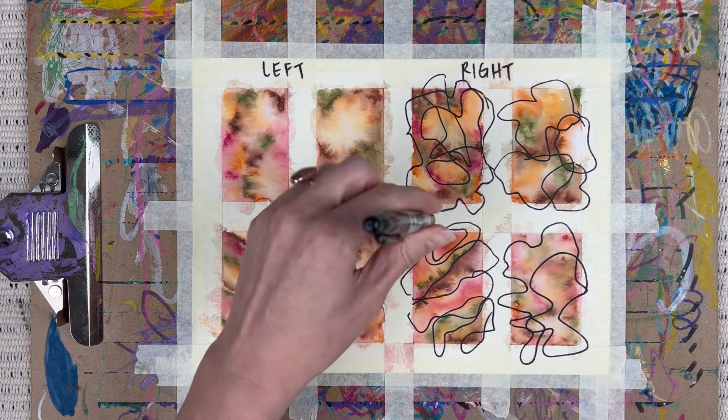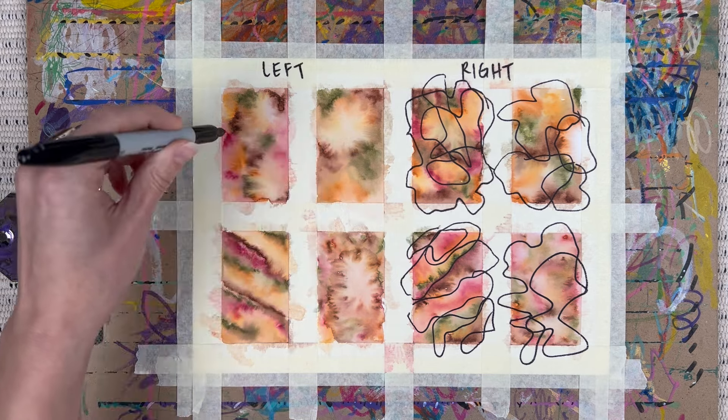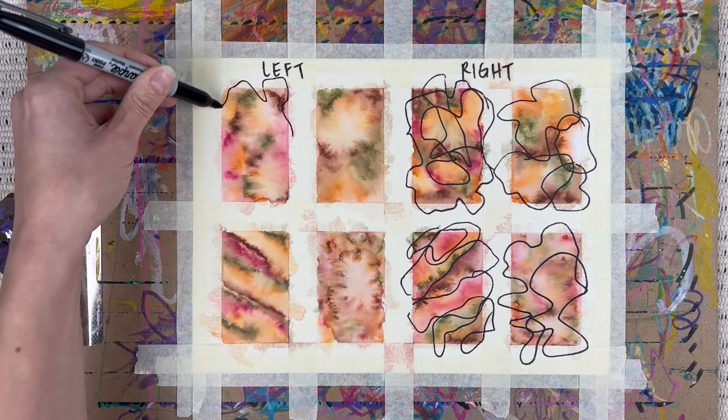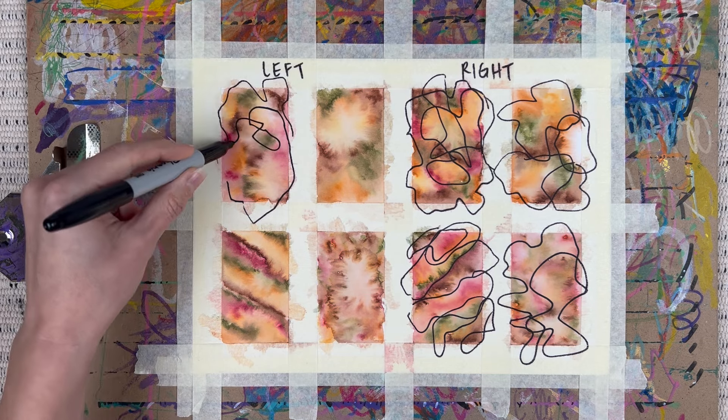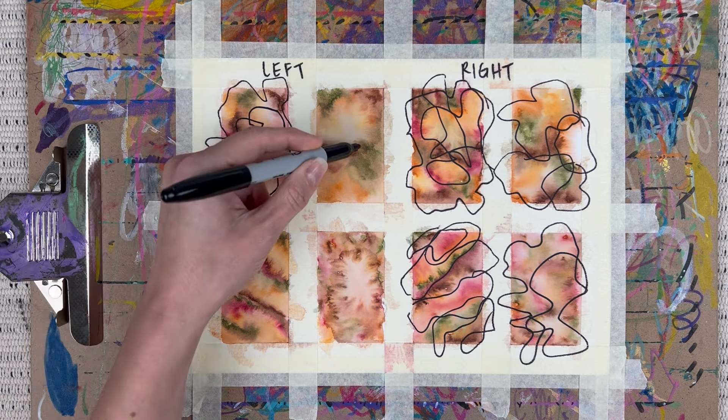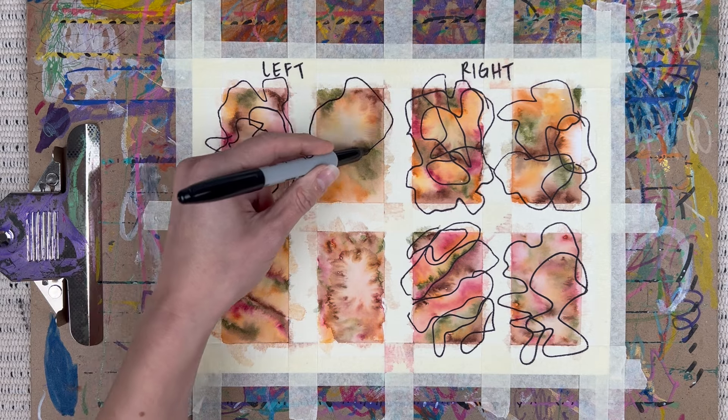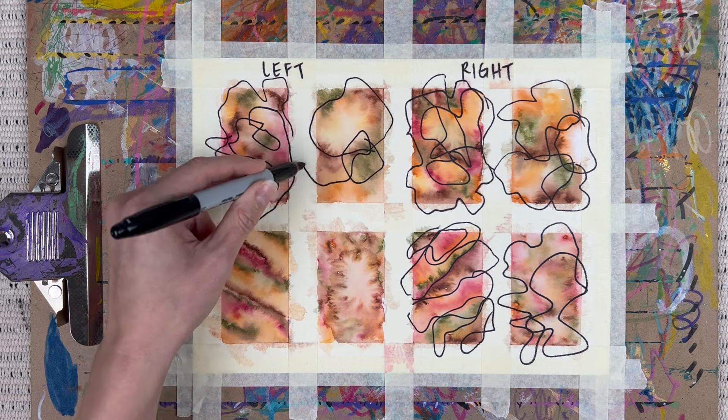Now let's do the left hand. So again, just loose grip. And it was interesting, the tip of the marker was dragging against the paper. I kind of had to readjust to get that smooth, fluid movement, but we got there.